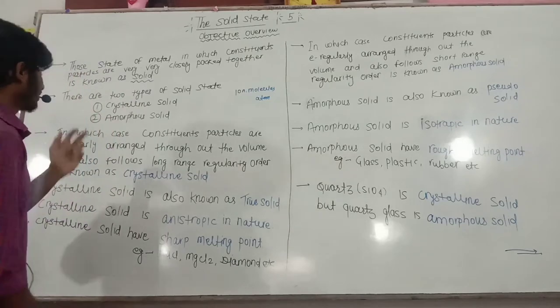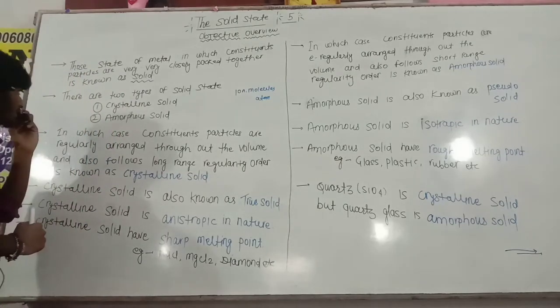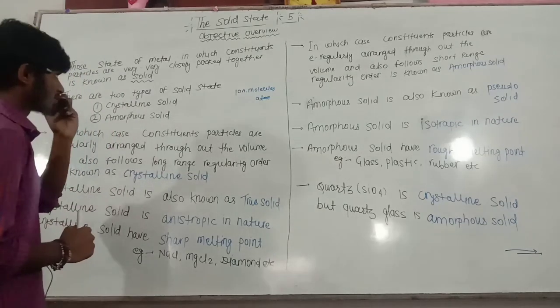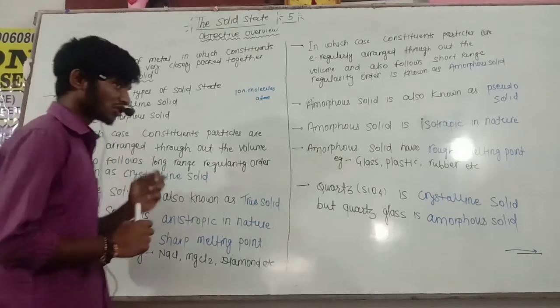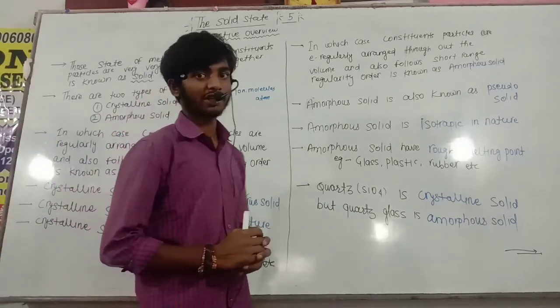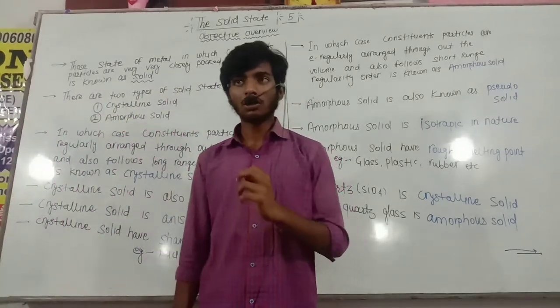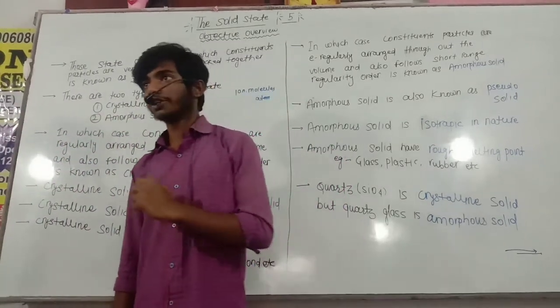The next step is that there are two types of solid state. In solid state, there are two types: first, crystalline solid, and second, amorphous solid.